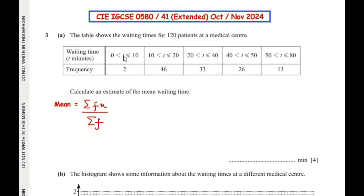Starting with the first class interval, 0 to 10, we find the midpoint by adding the two boundaries and dividing by 2: 0 plus 10 is 10, divided by 2 gives us 5. So 5 is the midpoint of this class interval. This needs to be multiplied by its frequency, which is 2.